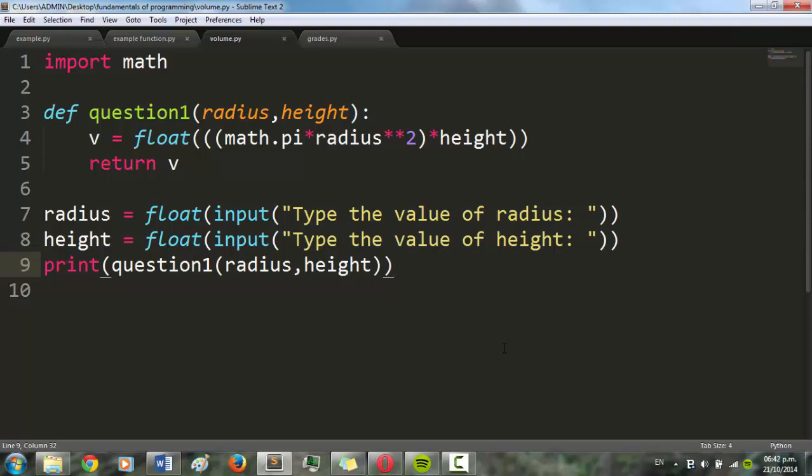And in this case, I have this function which I use to calculate the volume of a cylinder. As you can see, I have these two parameters which are radius and height.